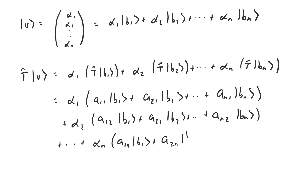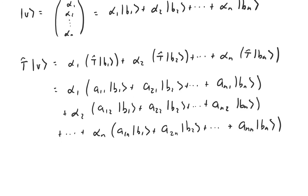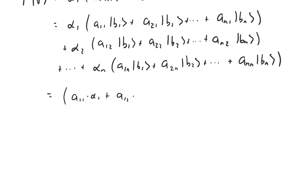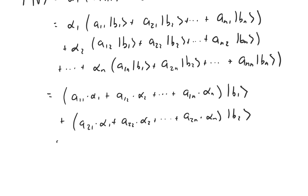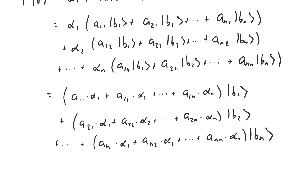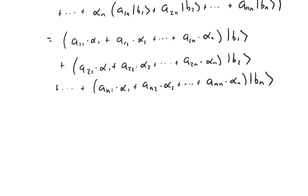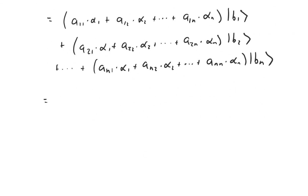And I want to rearrange this equation so we can see clearly what the coefficients are on each of the basis vectors. We can see that the coefficient in front of b1 is going to be alpha1*a11 plus alpha2*a12, all the way up to alphan*a1n, and so on for the other basis vectors. So this means that the column vector representation of the vector that v is transformed into looks like this.